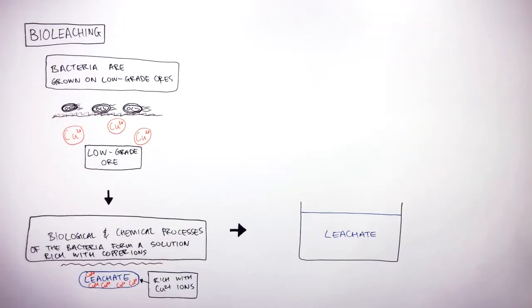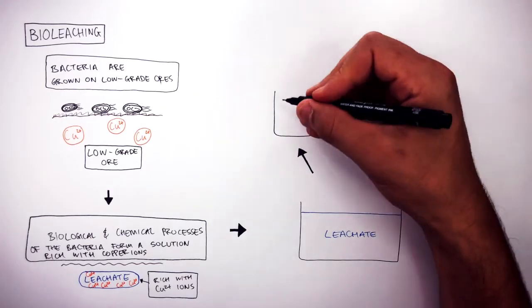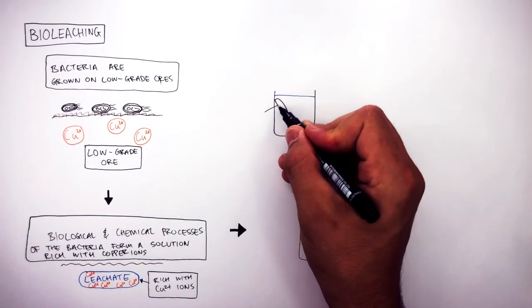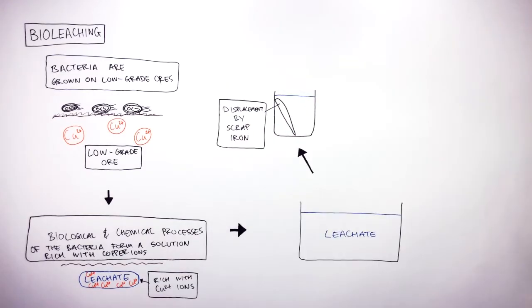In the next stage, we now have the leachate. And to extract the copper from the leachate, we add scrap iron to the leachate, where displacement by scrap iron extracts the copper. Or we can use electrolysis, which also extracts the copper from the leachate.